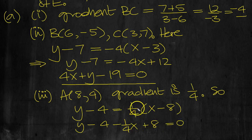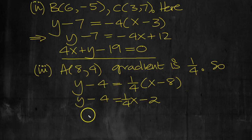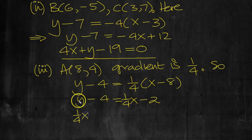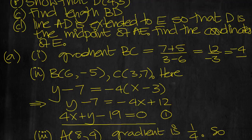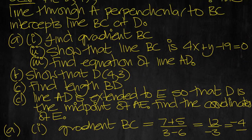Expanding the bracket, Y minus 4 equals one quarter X minus 2. Moving things around, we get Y minus one quarter X minus 2 equals 0. Moving everything to one side, one quarter X minus Y plus 2 equals 0. This can be labeled equation 1, and the previous equation is labeled equation 2.